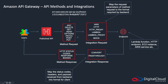The method request is where you define your HTTP verbs that are applicable for that API gateway in that particular resource, because remember, these are created within a resource. Then you can configure the integration request to map the request parameters of the method request to whatever format is required by your backend.